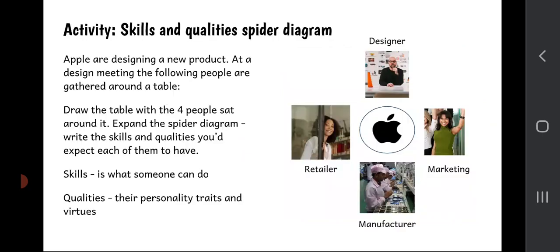There's another activity at this point. Imagine that Apple are designing a new product and having a fairly typical design meeting. At that meeting, some people have been invited around the table: a designer, marketing team, manufacturing, and retailer. Draw the table with the four people sat around it, then consider this as the start of a spider diagram or mind map. Write the skills and qualities you'd expect each person to have. Remember, a skill is something someone can do — for example, sketching or model making — while a quality is something about their personality, their traits, their virtues, like attention to detail or a curious personality.